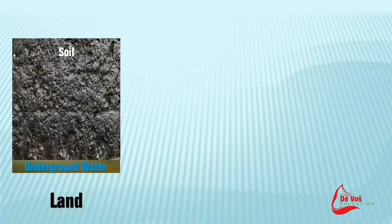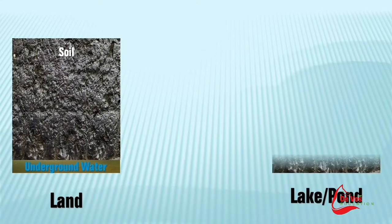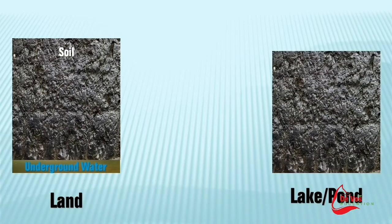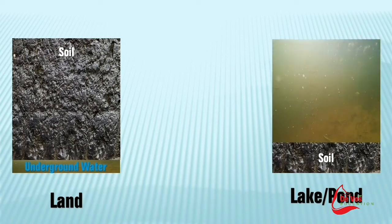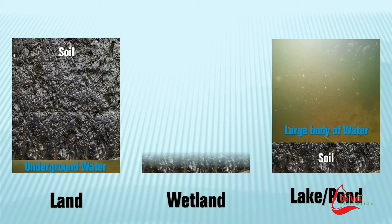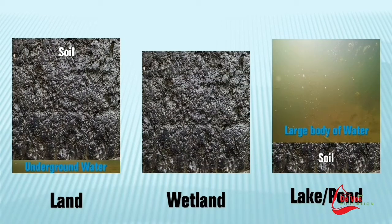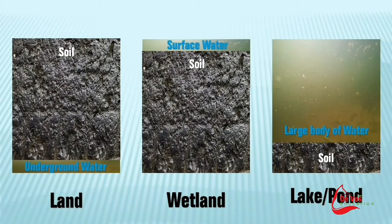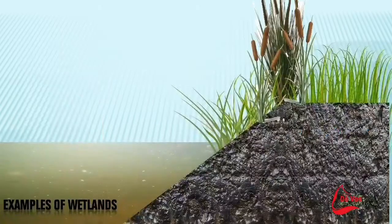Let's look at the difference between land, lakes and wetlands. With an ordinary piece of land we find the soil on top and groundwater underneath, which can be a few meters deep or very, very deep. With a lake we have a depth of water and at the bottom you find soil. Whereas with a wetland you have saturated soil with a thin layer, or sometimes a meter or two thick, of water on top of the surface.